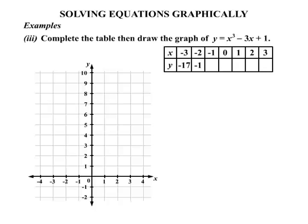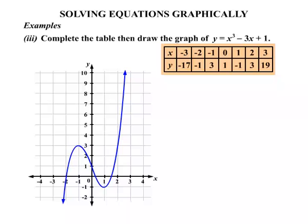Our third example: complete the table and draw the graph of y equals x cubed minus 3x plus 1. Substituting x equals minus 1 gives y equals 3; x equals 0 gives y equals 1; x equals 1 gives y equals minus 1; x equals 2 gives y equals 3; and x equals 3 gives y equals 19. With the table complete, plotting those points and drawing a curve gives the graph of y equals x cubed minus 3x plus 1.